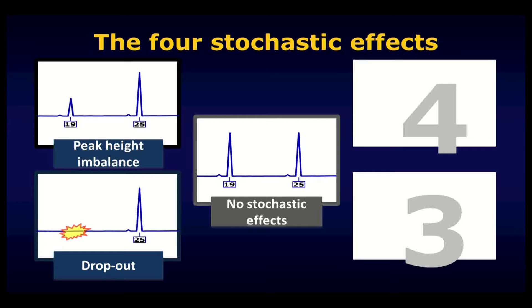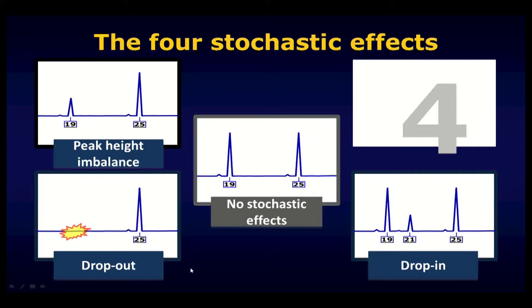A third kind of stochastic effect that commonly occurs is the reciprocal of dropout — and that is allelic drop-in. In this electropherogram, the 19 and the 25 have been detected as expected, but in addition to that, a third allele — here a 21 that wasn't part of the original sample — is also being detected. Many crime laboratories would call an allele like this 21 contamination. It may have come from an analyst, or from reagents or plastic ware used in testing. What makes it drop-in is that it wasn't actually part of the sample collected at the crime scene, yet it appears in the electropherogram as if it may well have been.